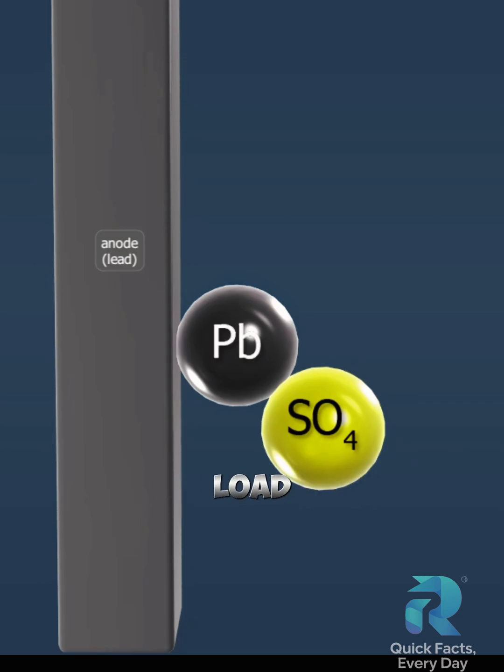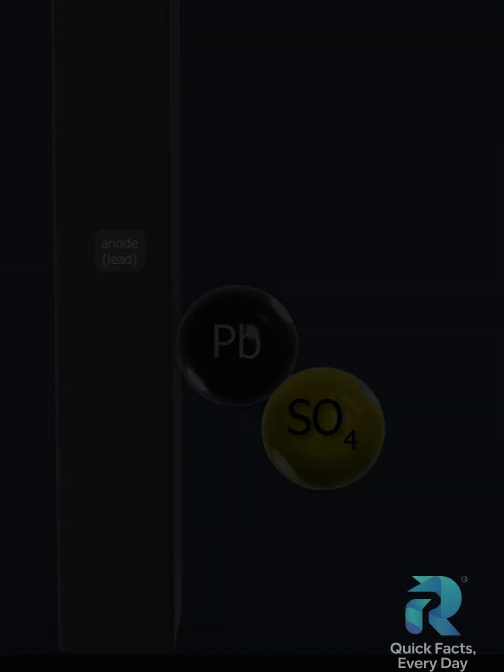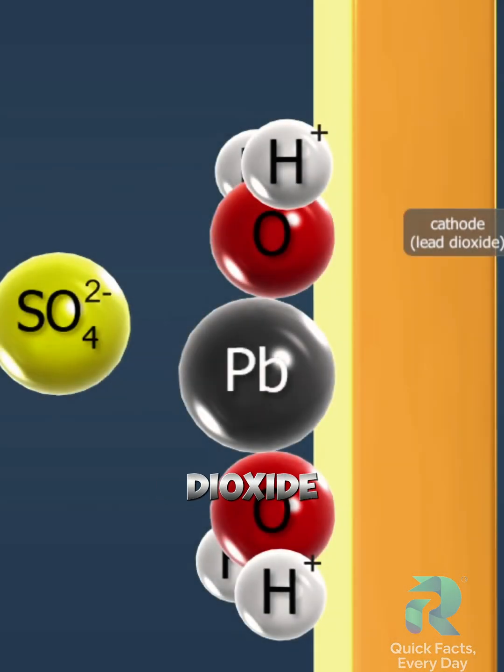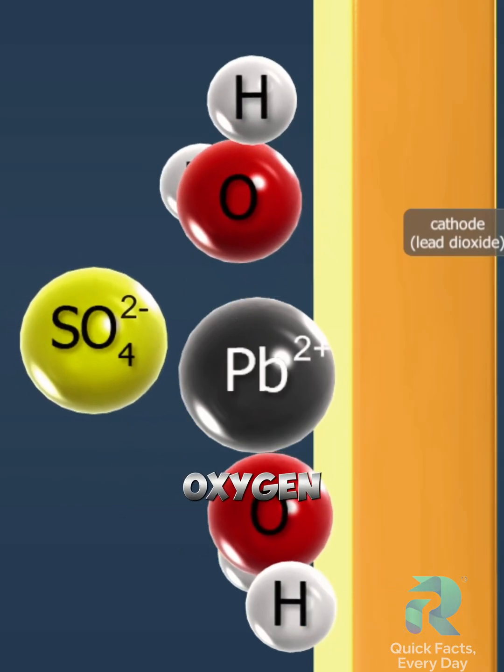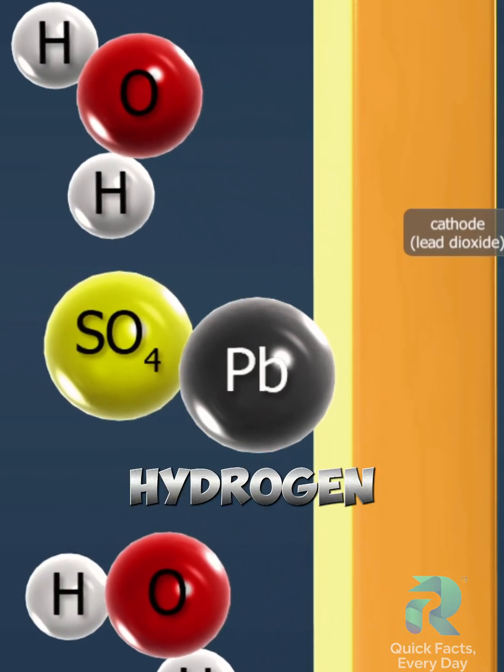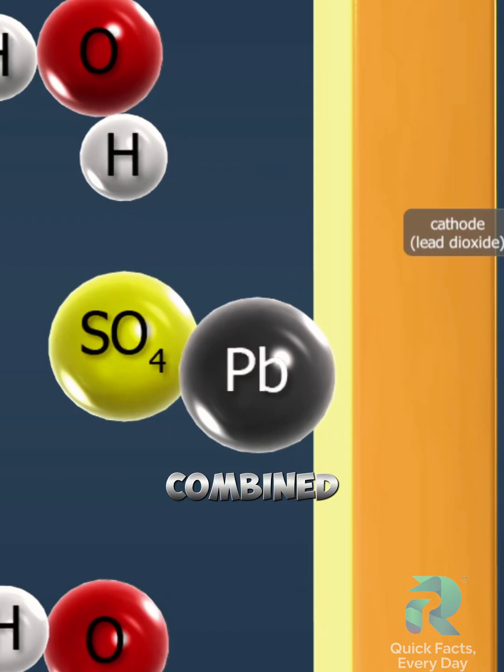During discharge, the lead dioxide on the lead dioxide plate also reacts with the sulfuric acid to form lead sulfate. During the process, the oxygen ion in the lead dioxide and the hydrogen ions in the electrolyte combine to form water.